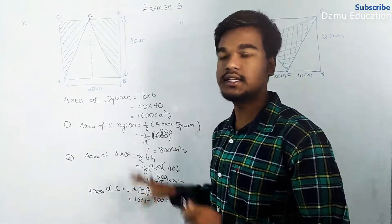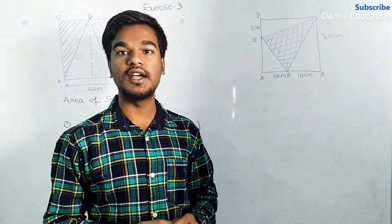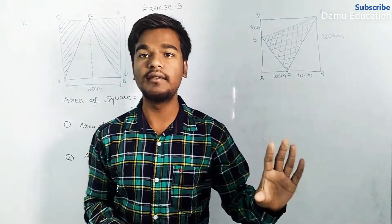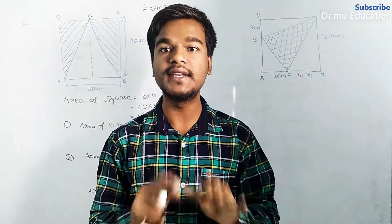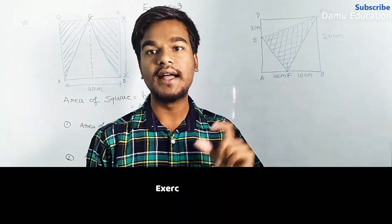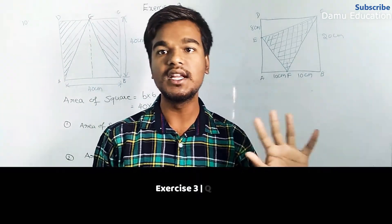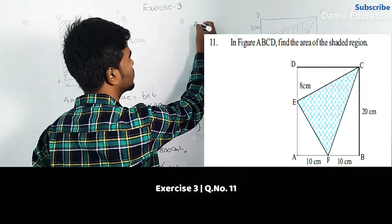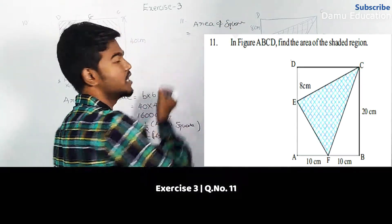Our 11th question: we need to find the area of the shaded region. For this type of figure, we first calculate the entire region's area, then calculate the areas of the other shapes we know, subtract them from the total, and that gives us the shaded area.